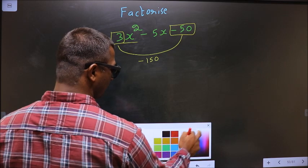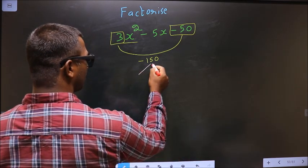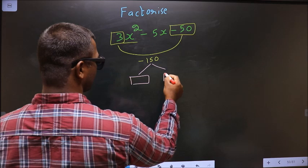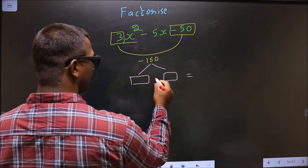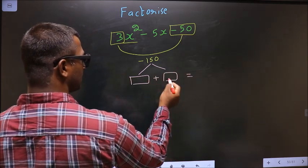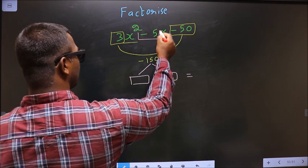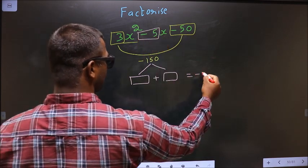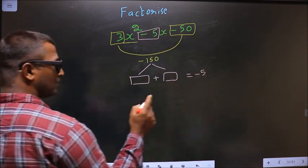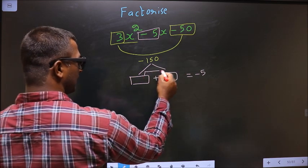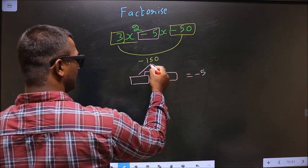Now look for 2 numbers such that when you add them you get the middle coefficient (-5), and when you multiply them you get -150.